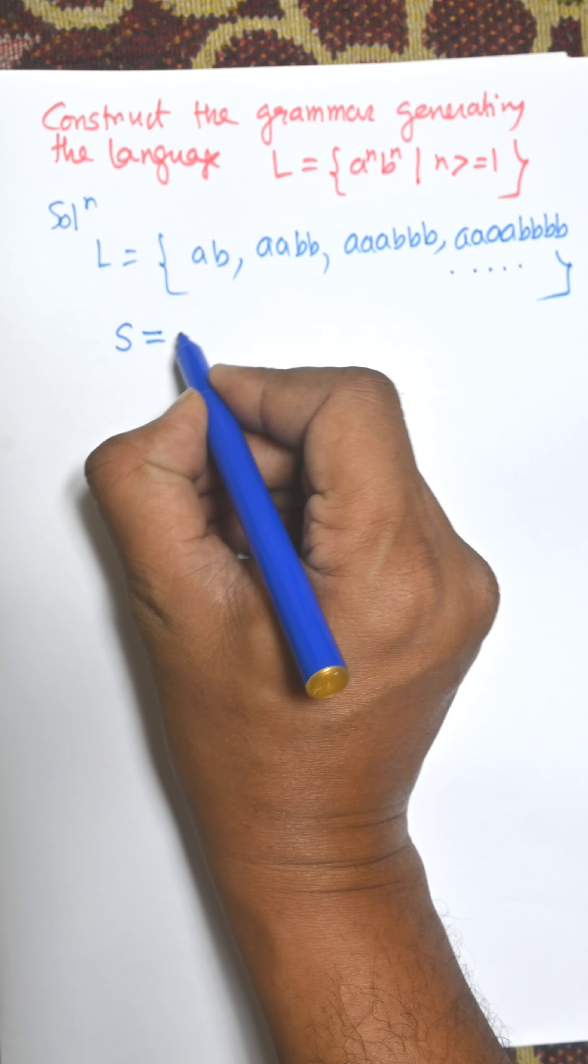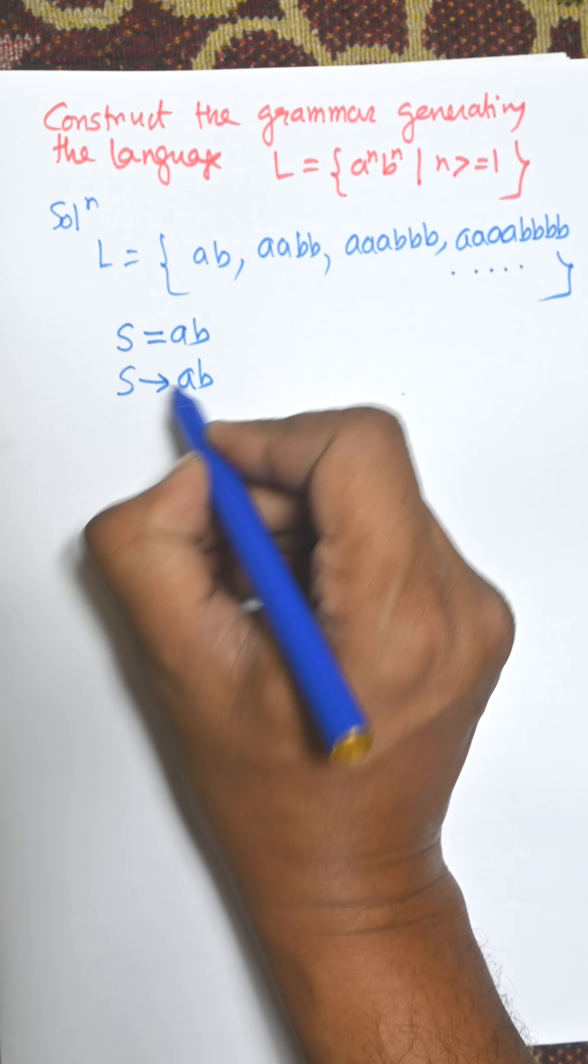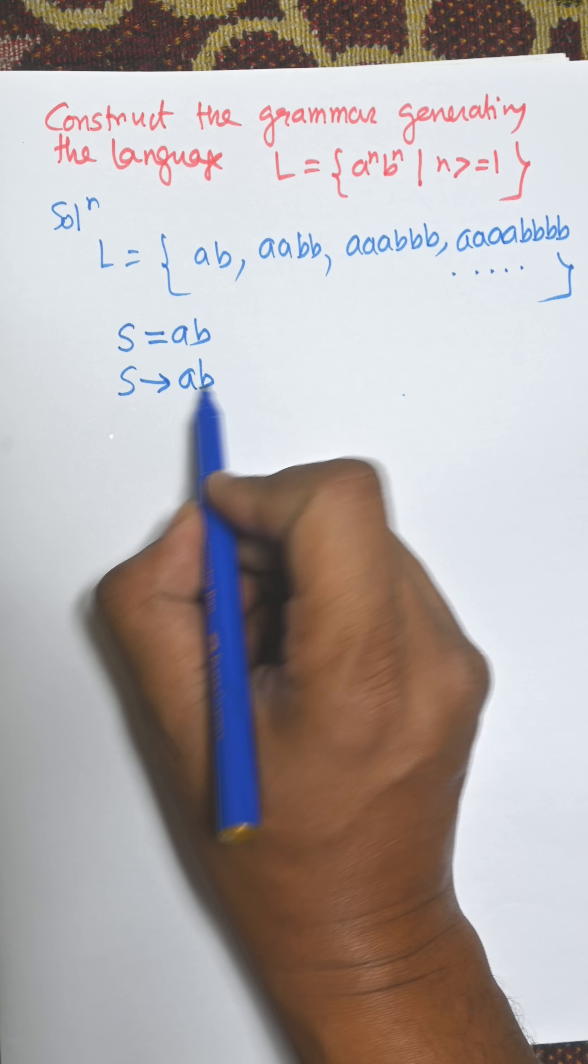For the first case, S equals AB. We can use S goes to AB as a production rule in our context-free grammar.